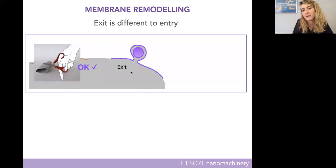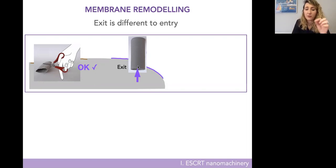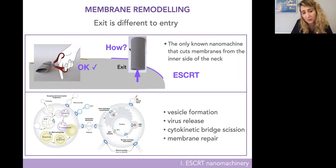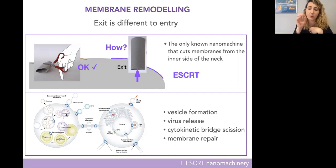To expel material out, given that the machinery is still on the inside, you need to cut the membrane neck from the inside. There is actually only one machine across all evolution and across all different membranes in eukaryotic cells that does this topological transition of cutting the neck from the inside. It's called ESCRT. It's not a minor machine — it's the only machine that can cut all membranes, both plasma membrane and internal membranes. It does the last step of cell division, the scission of the cytokinetic bridge, the release of viruses like HIV, the formation of intraluminal vesicles, exosome formation, and membrane repair. It is very evolutionarily conserved.